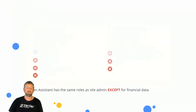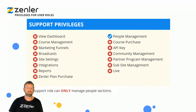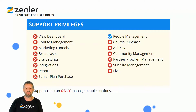Support privileges cover someone who's just going to look after the people management side and that's it — they don't have access to anything else. The support role can only manage the people sections.